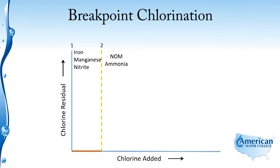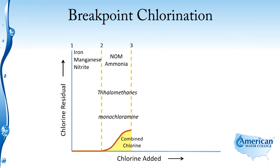Once that demand has been met and we continue adding chlorine, it's going to react with the natural organic matter and the ammonia in the water between points two and three, and form combined chlorine — which is for the most part monochloramine. Also between points two and three, this is where trihalomethanes are formed due to the reaction between chlorine and natural organic matter. At this peak, we have a chlorine to ammonia nitrogen ratio of five to one.